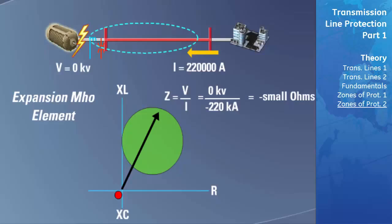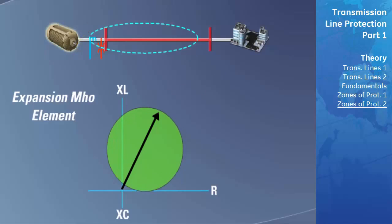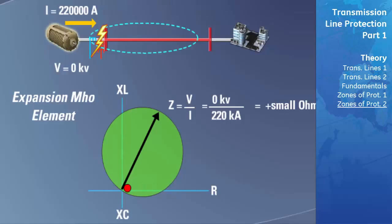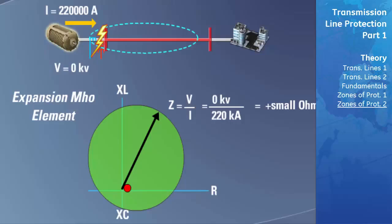Notice, however, that the reach of the Mho circle did not change and still extends out to the end of the original zone of protection. If a fault occurs just after the beginning of the transmission line, current will flow into the CT from the positive direction and the calculated impedance will be positive, plotting very near the origin in the positive direction. To make sure the Mho characteristic does recognize this as an internal fault that needs to be cleared, the relay recognizes the low positive impedance and enlarges the radius of the circle. Since the Mho circle now extends past the origin to include a larger area, the location of the fault is sure to fit in the zone of protection and the fault can be cleared properly. The reach of the Mho circle did not change and still extends out to the end of the original zone of protection.